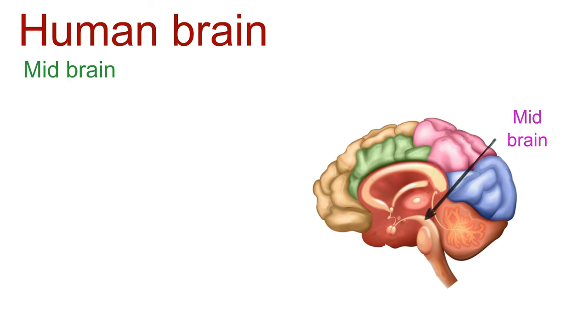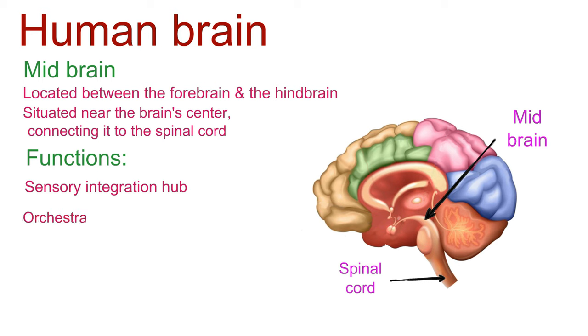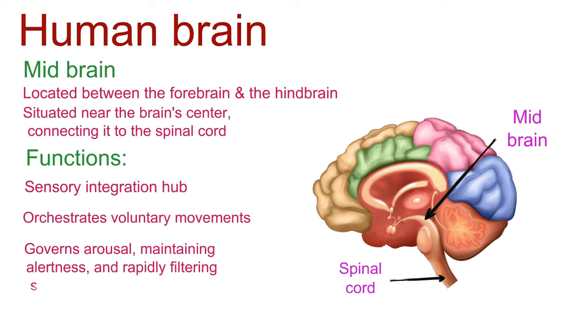The midbrain is located between the forebrain and the hindbrain. It's situated near the brain's center, just above the brain stem, connecting it to the spinal cord. The midbrain functions as a sensory integration hub, merging vision and hearing stimuli. In terms of motor coordination, it orchestrates voluntary movements. It also governs arousal, maintaining alertness, and rapidly filtering sensory information for swift responses.